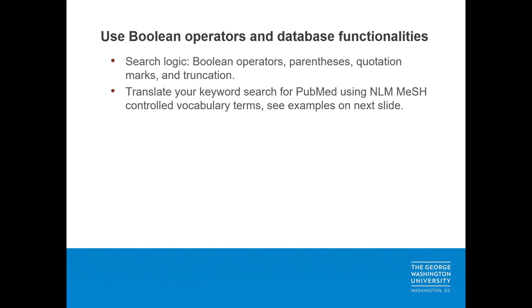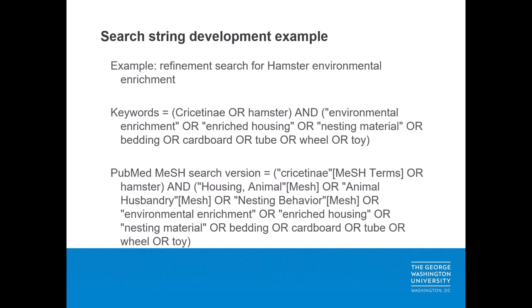For the search logic and database limits, use Boolean operators to combine or separate terms, use parentheses to nest search statements, use quotation marks around a phrase, and possibly truncation if the database supports that. Here is an example for a refinement search — in this case, searching for environmental enrichment for hamsters. The keywords might be Cricetinae or hamster, and phrases such as environmental enrichment, enriched housing, nesting material, bedding, cardboard tube, wheel, or toy.